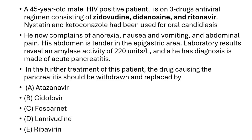This case we have already discussed yesterday, but the second part of this question concerns a 45-year-old male HIV-positive patient on a 3-drug antiretroviral regimen consisting of Zidovudine, Didanosine, Ritonavir, Nystatin, and Ketoconazole for oral candidiasis. He now complains of anorexia, nausea, vomiting, and abdominal pain. His abdomen is tender in the epigastric area.